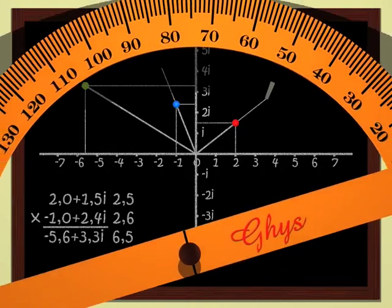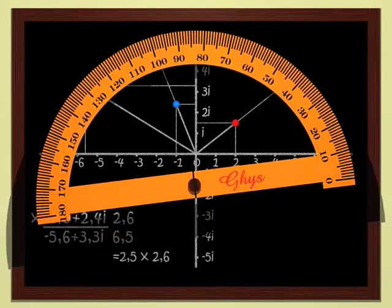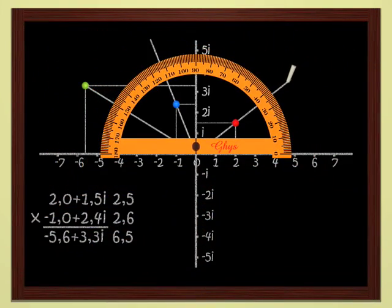The argument of a complex number is measured by the angle between the abscissa axis and the straight line joining the origin to the point. Here, for instance, the argument of the red complex number is 36.8 degrees.